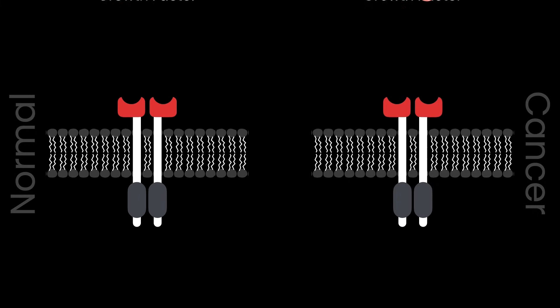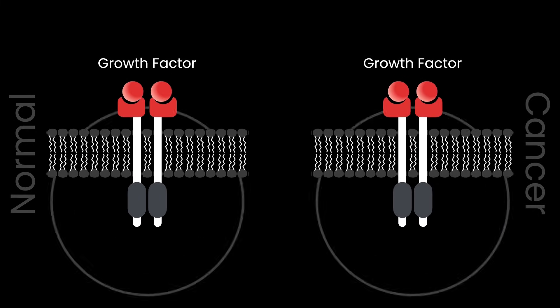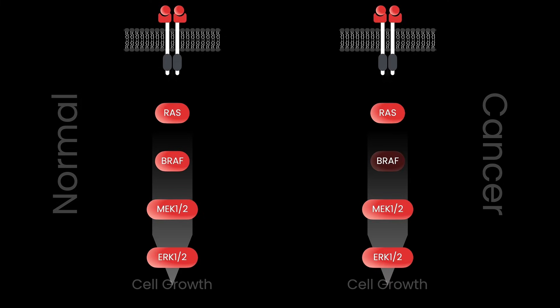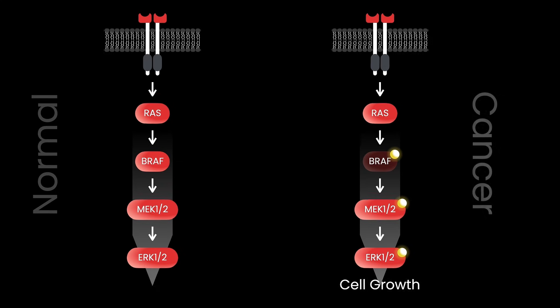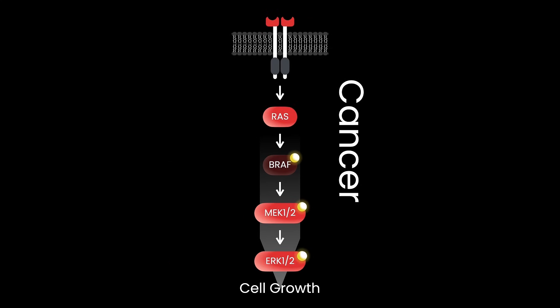Normally, a growth factor comes in and attaches itself to a receptor, and the receptor sends signals through kinases to trigger cell division, just like what we've seen before with insulin. But with this mutation, BRAF gets stuck. It can't turn itself off, even after the growth factor goes away. The cascade keeps firing, signal keeps amplifying, and the cell doesn't know when to stop dividing.